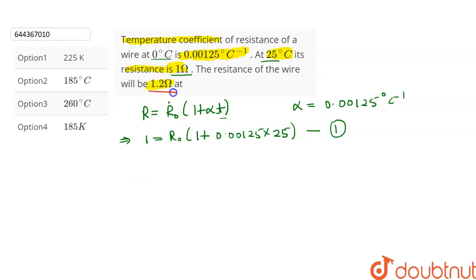Let's divide equation 2 by equation 1. So we will get 1.2 divided by 1 is equal to 1 plus 0.00125 into t dash upon 1 plus 0.00125 into 25.